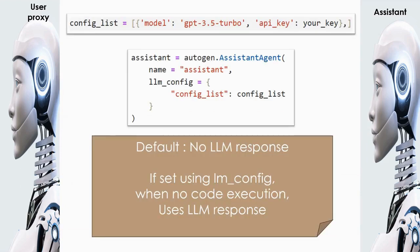First, we create an instance for the AssistantAgent using autogen.AssistantAgent and we can give it a name. It is possible that the user proxy executes a Python code written by the assistant to solve the problem. It is also possible that there is no code to be executed, in which case the LLM response is used.